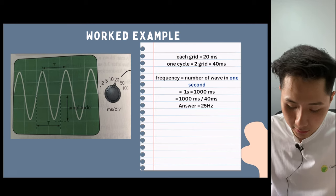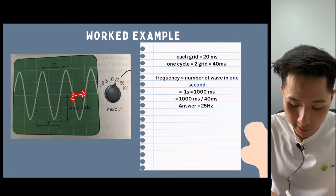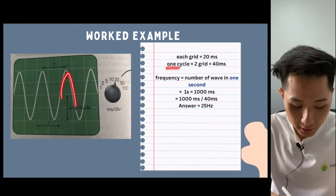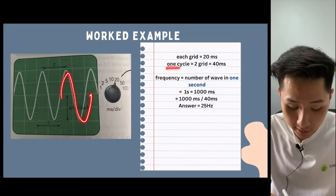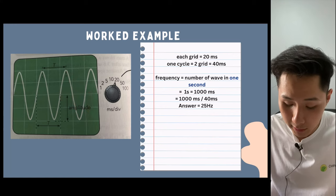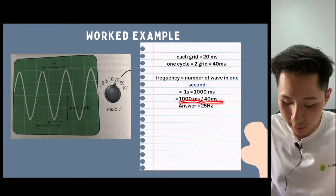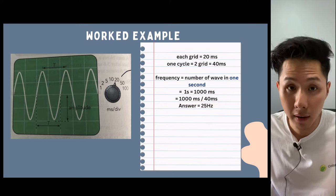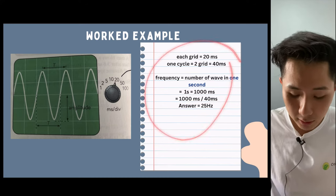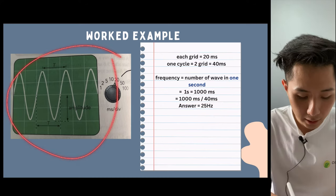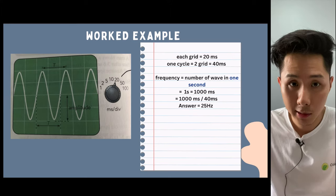If we look at the answer here, each grid represents 20 milliseconds, and one cycle will be 40 milliseconds. For frequency, we just have to calculate the number of waves produced in one second, in which we can use 1000 divided by 40 to get 25 hertz. That's how you calculate frequency if you have a reading on this oscilloscope.